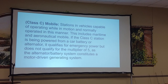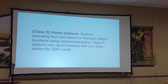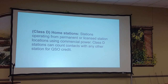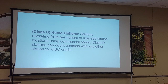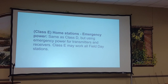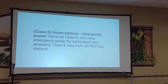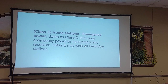A 'C' is a mobile station — somebody in a vehicle. A 'D' is a home station, somebody operating from their house. If you've got a radio set up at your house and you're doing Field Day but can't come out to Germantown where we're doing Field Day, you can do Field Day from home and you would be a D station. You would be an E station if you're working from home but working off a battery or some other emergency power other than plugging it into the wall.